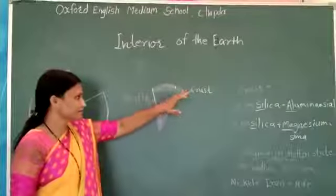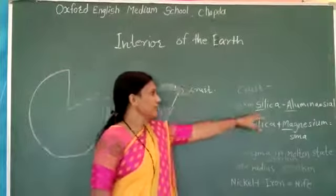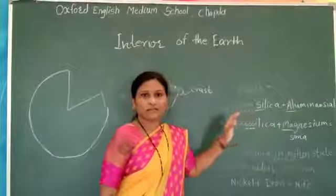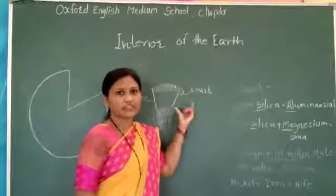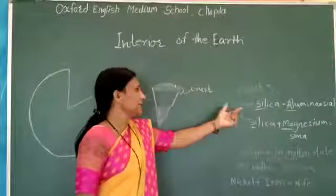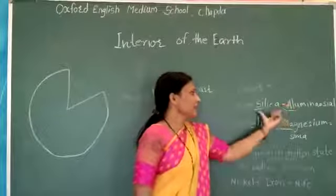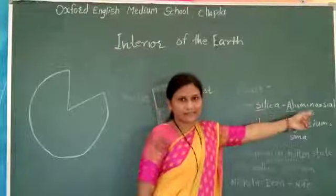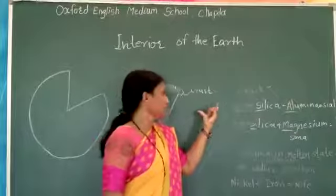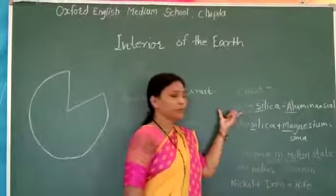This crust layer is made of silica and alumina at the continental masses. The continental crust layer is known as sial. The width of this crust layer is 35 kilometers.